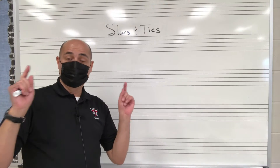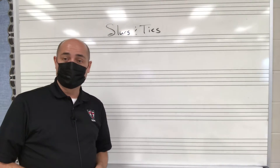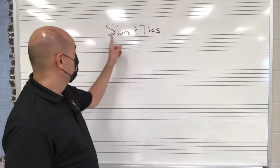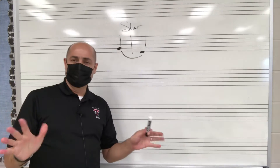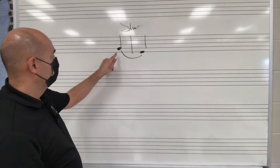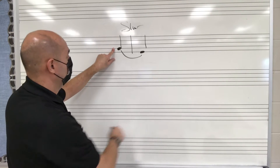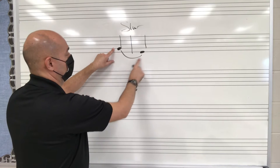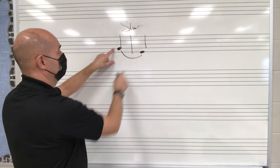Hi and welcome to lesson 14 of Music Theory in About a Minute. Today we're going to discuss slurs and ties. A slur connects two notes of different pitch — so from the second line here to the first line here, we connect these two notes and slur down to it.